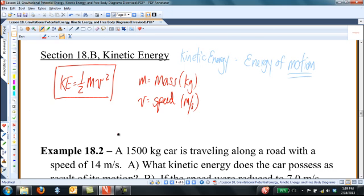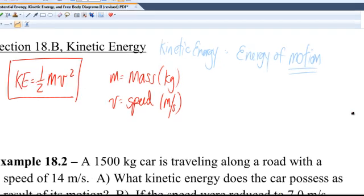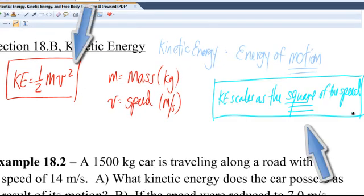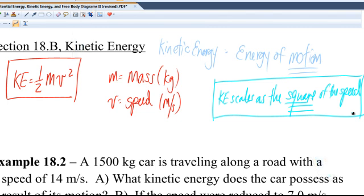Now notice something. The kinetic energy scales as the square of the speed. This is a big deal. If you double the speed of an object, its kinetic energy doesn't just double. It increases by a factor of double squared, or by a factor of four. In other words, when you double the speed, the kinetic energy quadruples. If you triple the speed, the kinetic energy increases by a factor of three squared, or by nine.